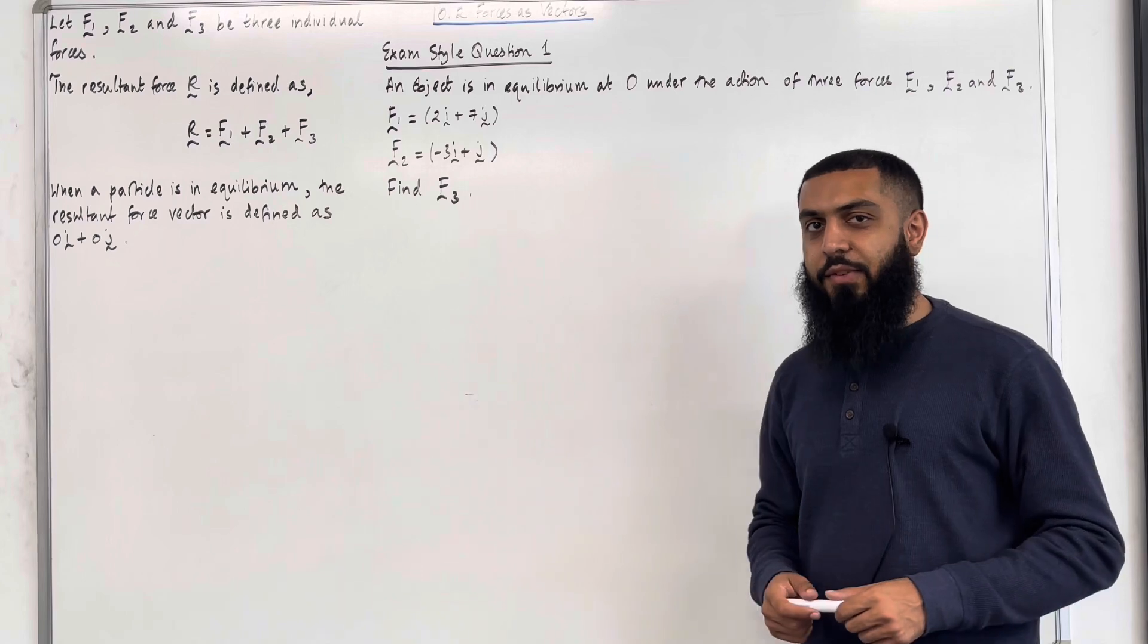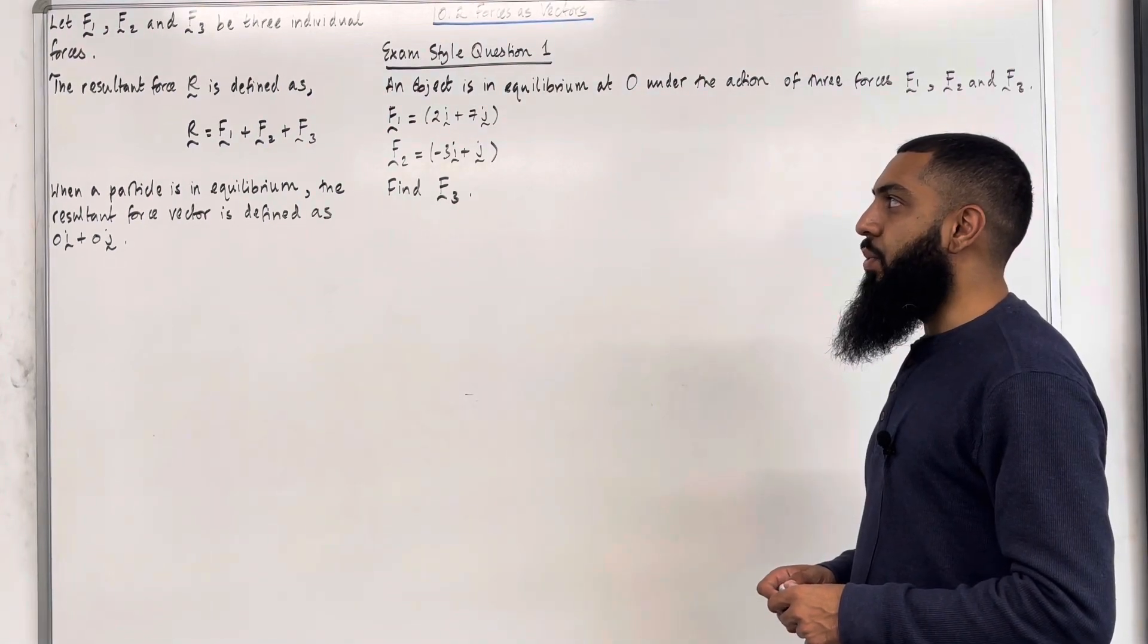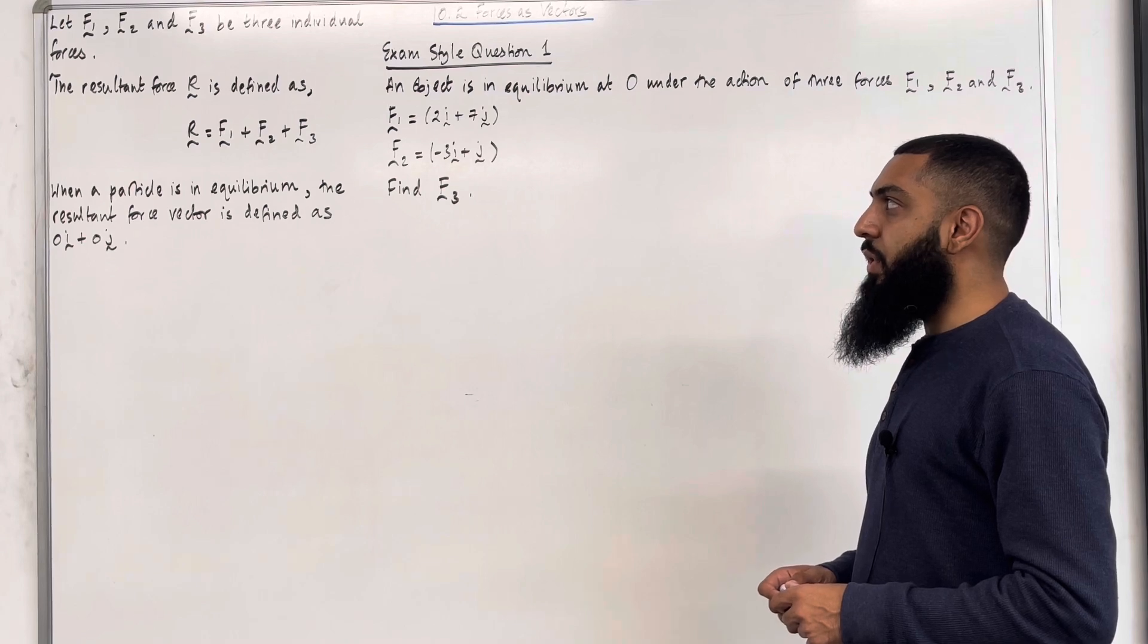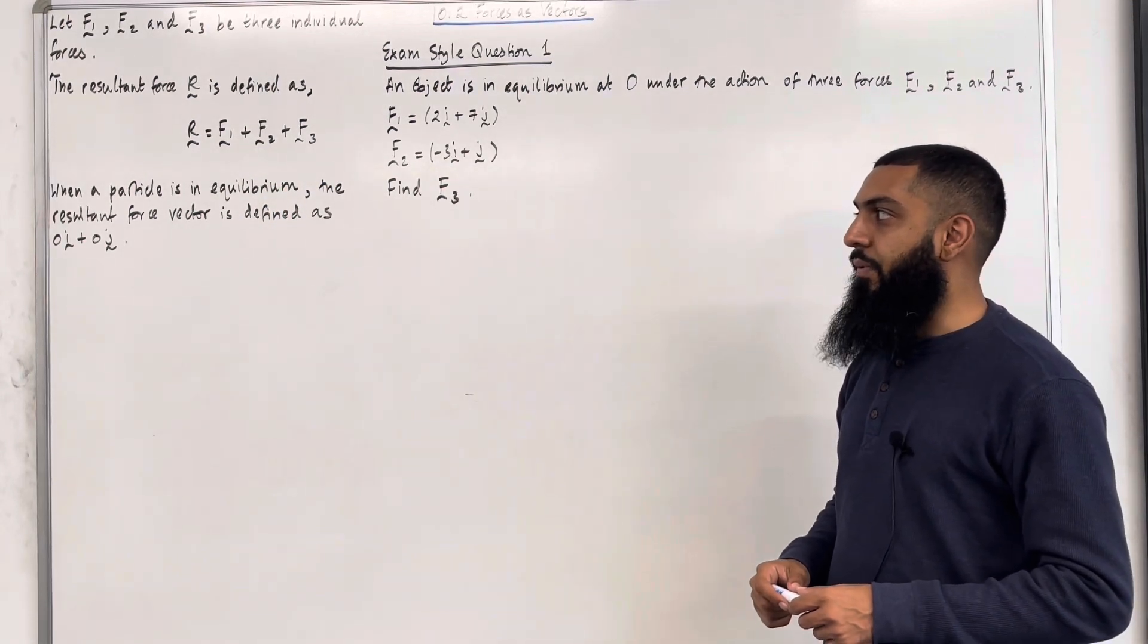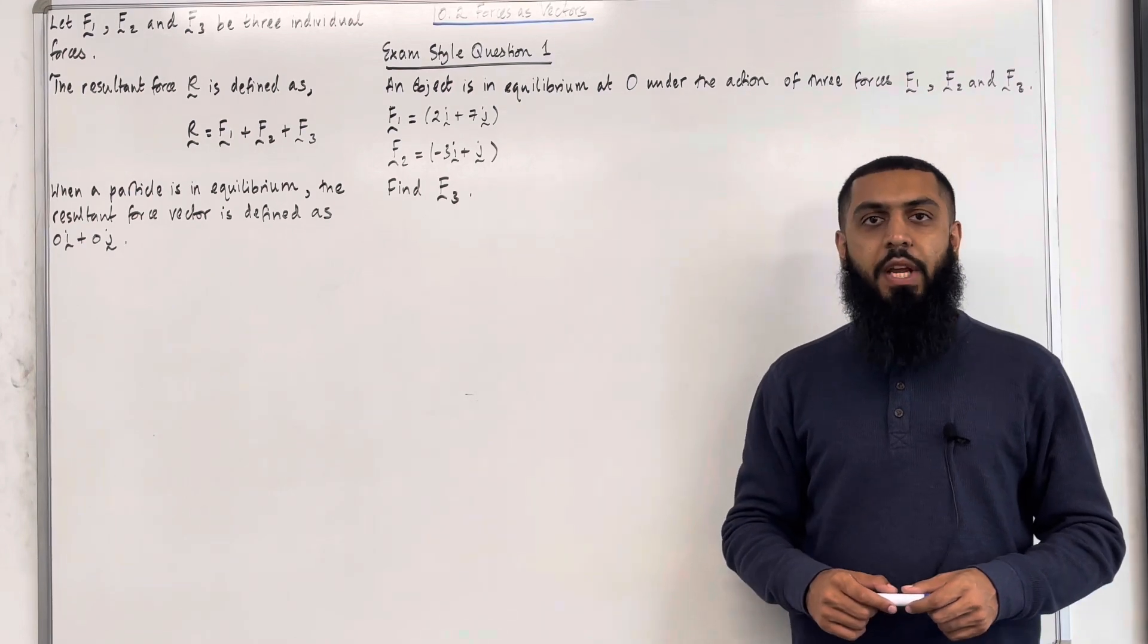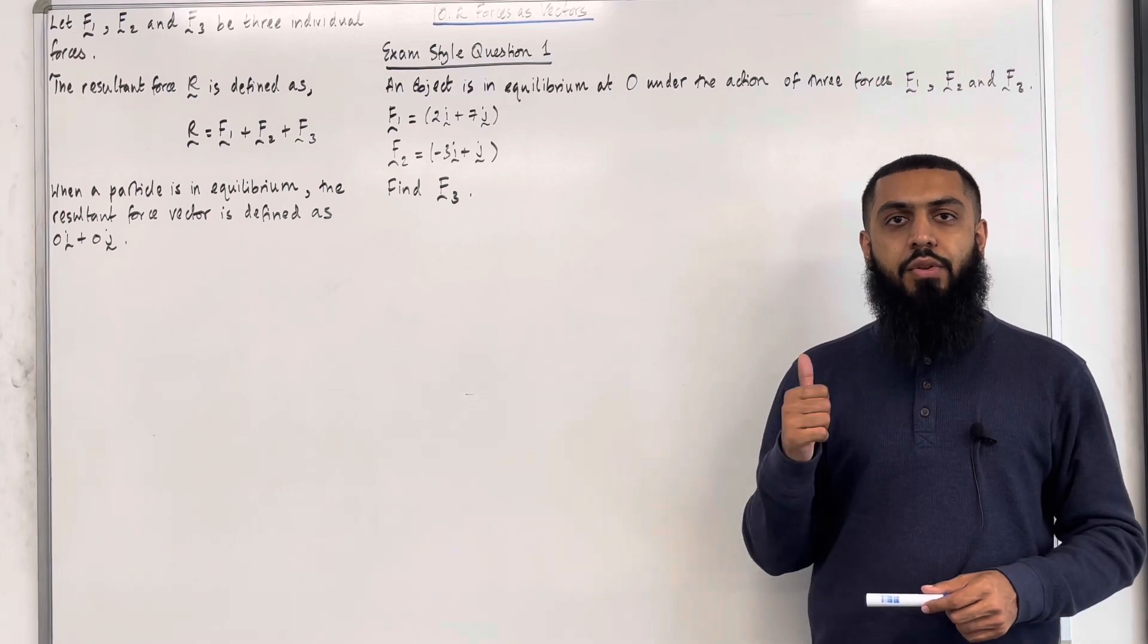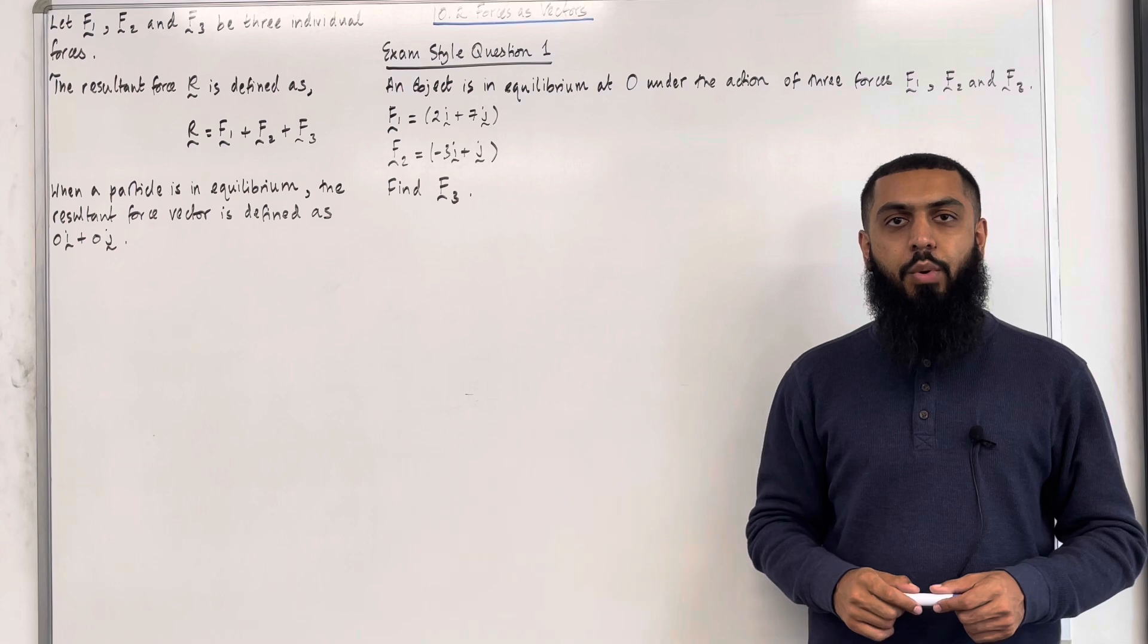Let's have a look at the key facts of this section. Let F1, F2 and F3 be three individual forces. The resulting force R is defined as R equals F1 plus F2 plus F3. When a particle is in equilibrium, the resulting force vector is defined as 0i plus 0j. These are the key facts of 10.2 forces as vectors. I'll be implementing these key facts within two exam style questions.